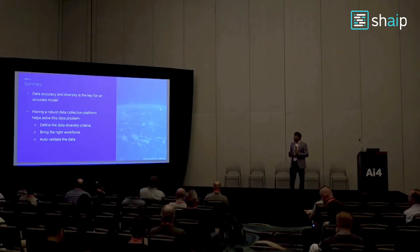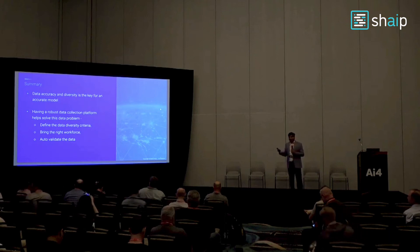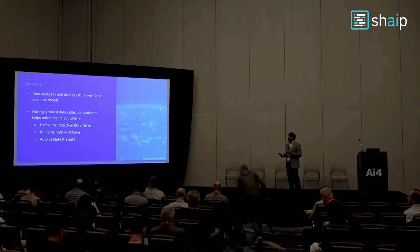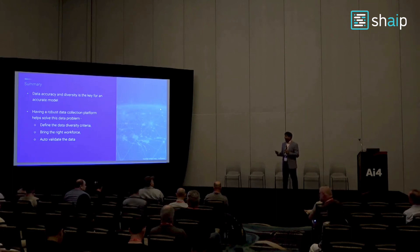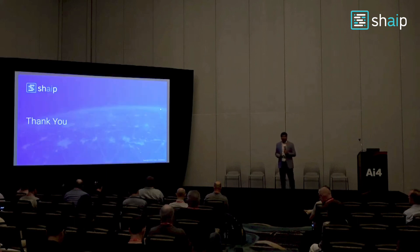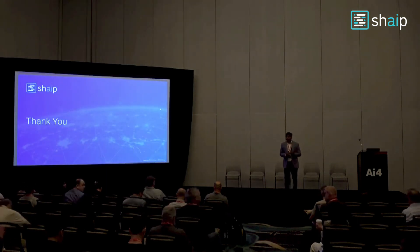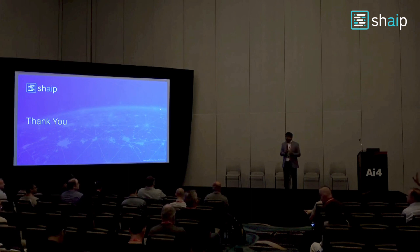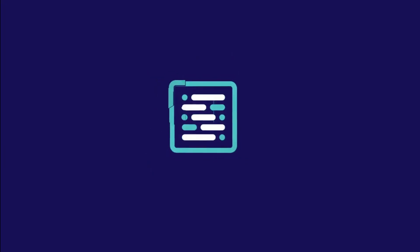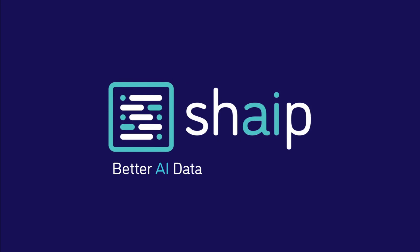In summary: data accuracy and diversity is the key to an accurate model. We saw the challenges data scientists face and the risks of inaccurate or incomplete data. Having a robust data collection platform helps solve this by defining data diversity criteria, bringing in the right workforce, and auto-validating data to give you the accurate models you're looking for. Thank you so much. Shape — better AI data, better results.